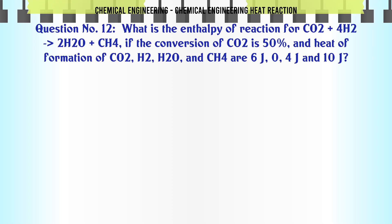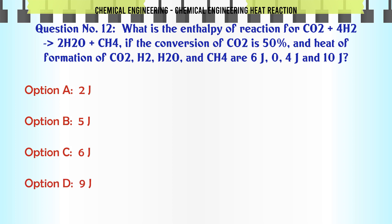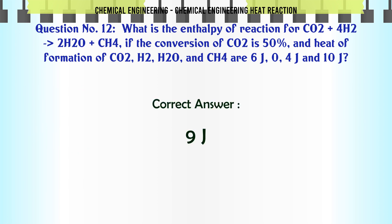What is the enthalpy of reaction for CO2 + 4H2 → 2H2O + CH4 if the conversion of CO2 is 50% and heat of formation of CO2, H2, H2O, and CH4 are 6J, 0, 4J, and 10J? A: 2J, B: 5J, C: 6J, D: 9J. The correct answer is 9J.